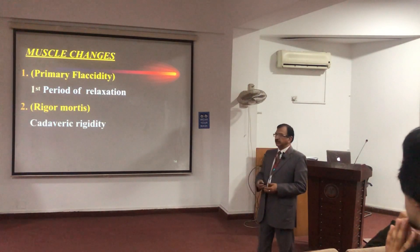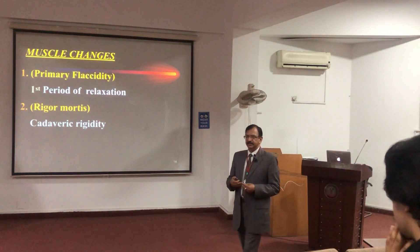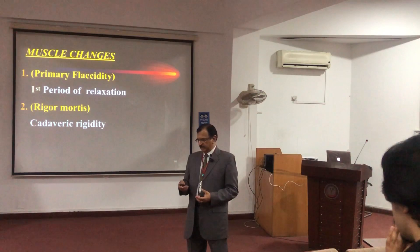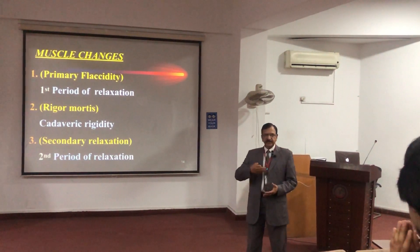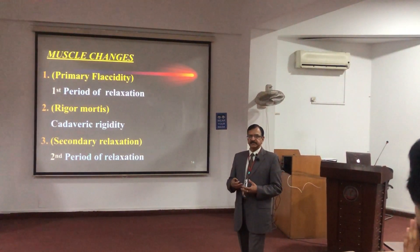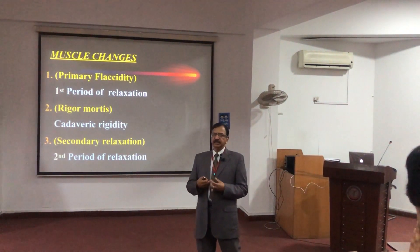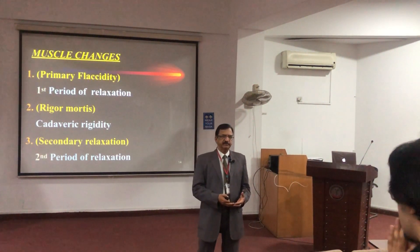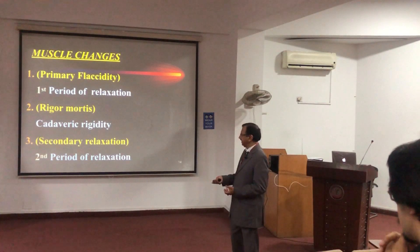Then rigor mortis — cadaveric rigidity — where muscles become rigid. This is the second change in the muscle. Then secondary relaxation: when putrefaction sets in, because of the disintegration and dissolution of the tissues, the muscle will relax. That is secondary relaxation.